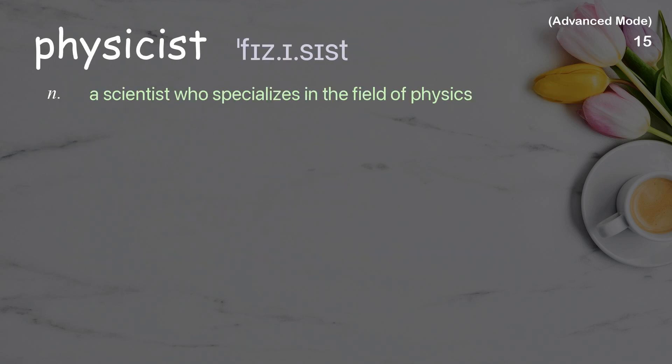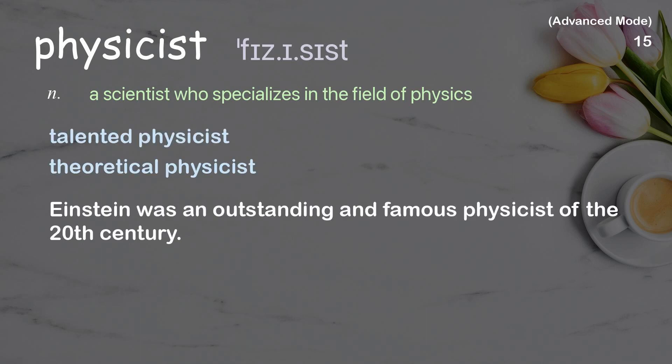Physicist: a scientist who specializes in the field of physics. Examples: talented physicist, theoretical physicist. Einstein was an outstanding and famous physicist of the 20th century.